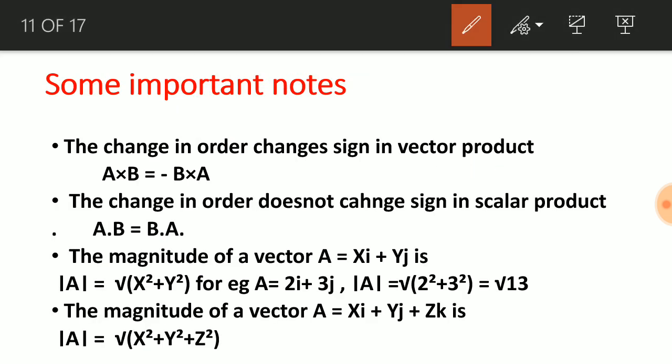Some important notes: in the vector product, changing the order from A×B to B×A introduces a negative sign — B×A = −(A×B). For dot product, the order does not change the sign: A·B = B·A. The magnitude of a 2D vector A = xi + yj is √(x² + y²). For example, if A = 2i + 3j, then the magnitude of A is √13.